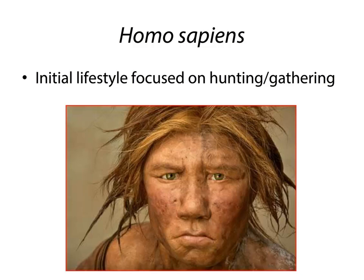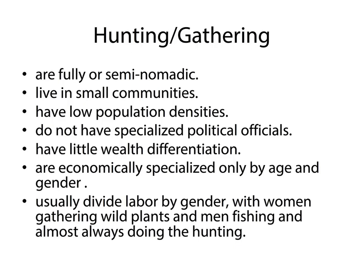In the next slide, we'll talk about why we shifted away from hunting and gathering. When you're a hunter and gatherer, you're either fully or semi-nomadic — you're constantly moving around and basically take everything you have with you at all times. Because of that, you're going to live in small communities since everybody has to shift as a unit. Also, low population densities — you can't have too many children at one time because you're not going to be able to pick them up and carry them. On the plus side, no political officials — and little wealth differentiation because everybody has to work together.